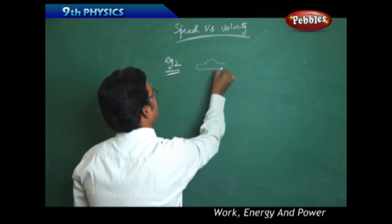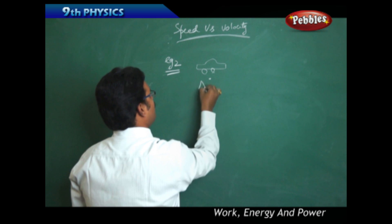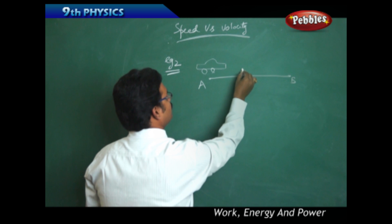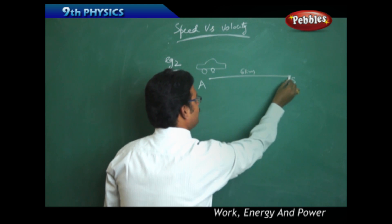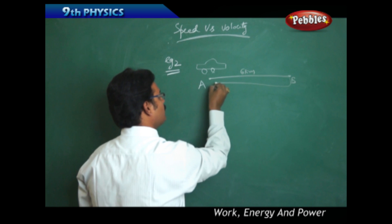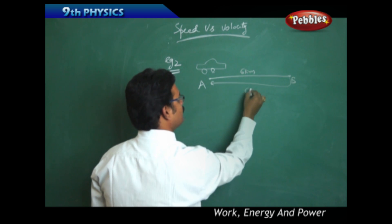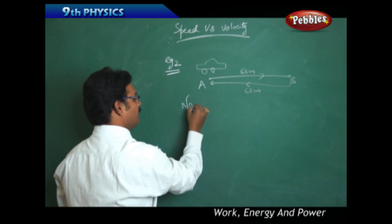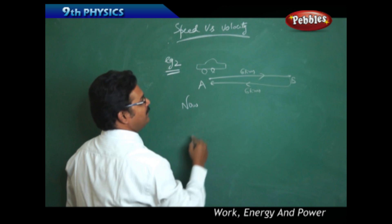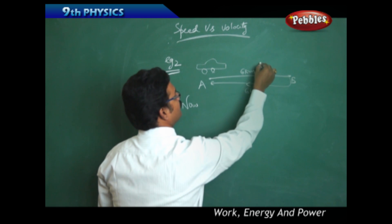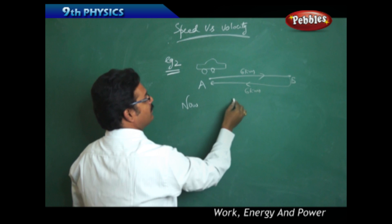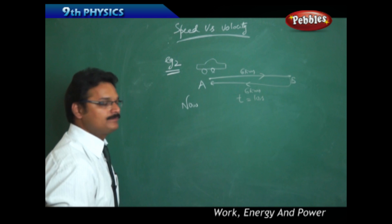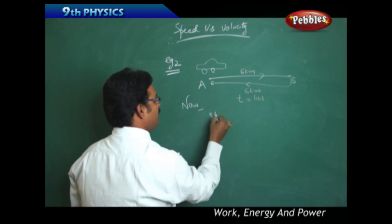Example two: a car starts from point A, goes to point B which is six kilometers away, then turns and comes back to point A — also six kilometers. The total time taken for both A to B and B to A is 10 seconds.